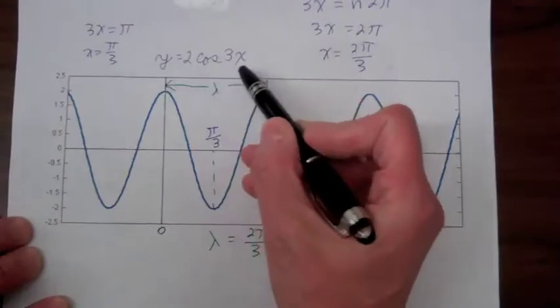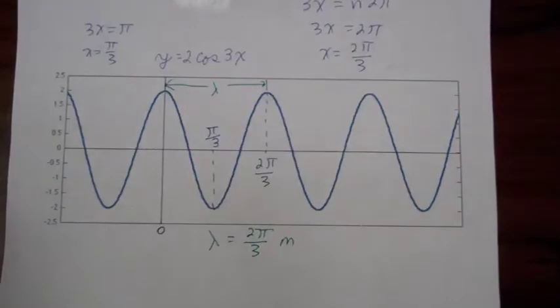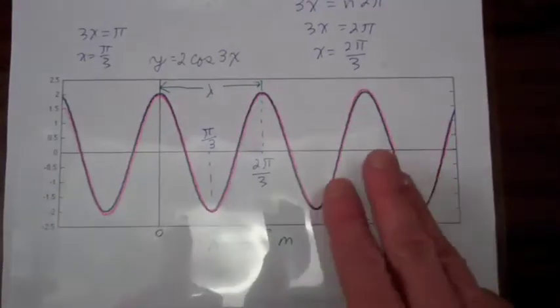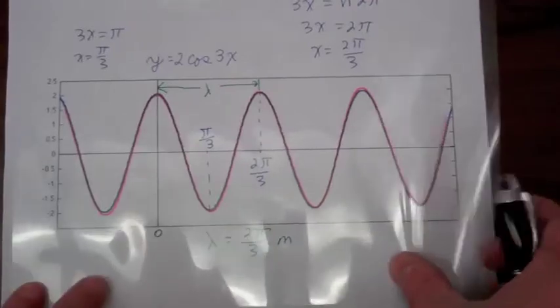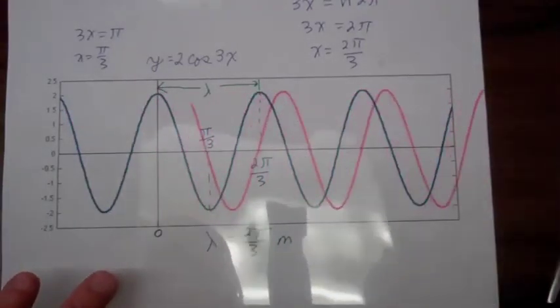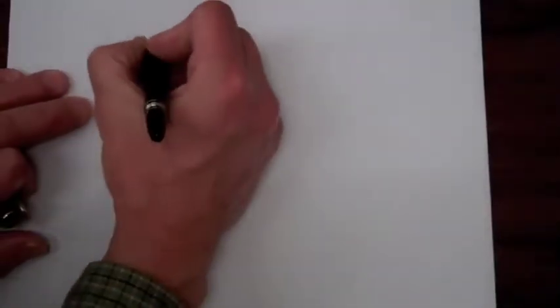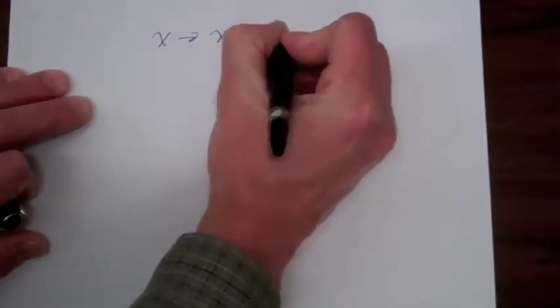y = 2cos(3x) represents a stationary pattern. Now let's look at how we can turn it into a propagating or traveling wave — we want the cosine function to move with some velocity, and let's assume in the plus x direction. What we have to do is replace x with x minus the velocity times time.